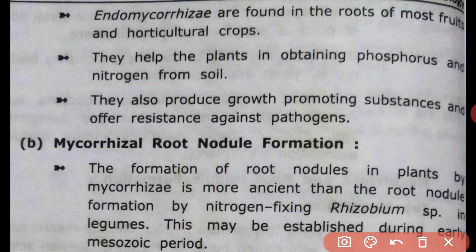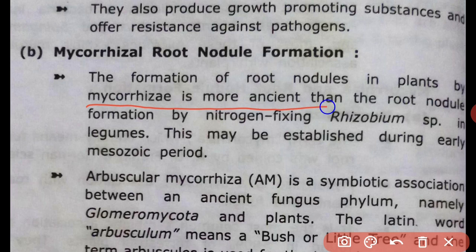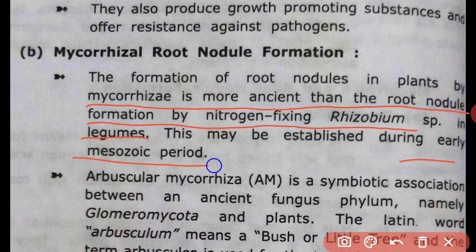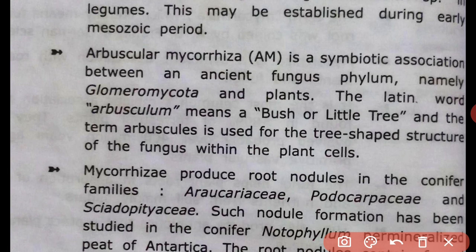The second topic is mycorrhizae root nodule formation. Formation of root nodules in plants by mycorrhizae is more ancient than root nodule formation by nitrogen-fixing bacteria such as Rhizobium species in legumes. These associations may have been established during the early Mesozoic period, involving Glomeromycota and plants.